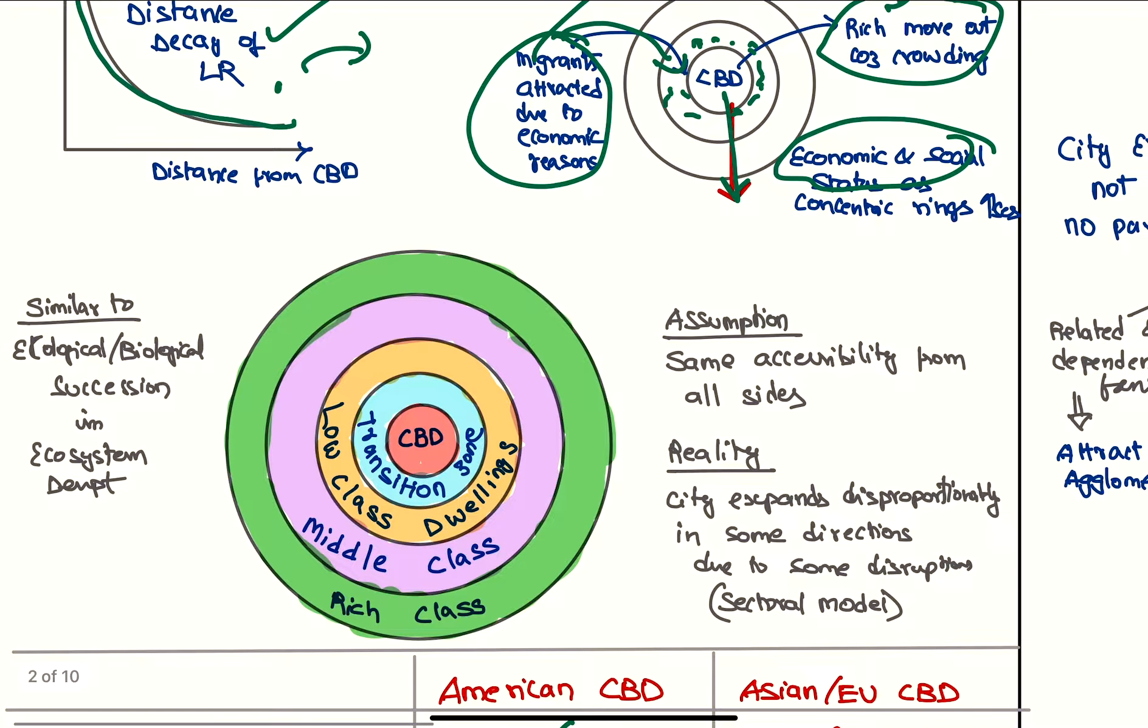This is the model - we have the CBD here, then we have the transition zone which has slums and shanty towns, here we have low class dwellings, middle class dwellings, and this is similar to ecological or biological succession which is seen in ecosystem development.